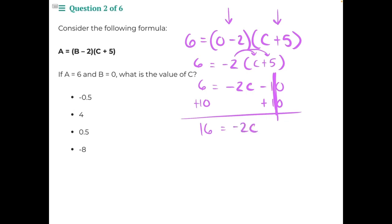Negative 2 is being multiplied to C, so the opposite operation here is division. Divide both sides by negative 2. These will cancel each other out, leaving us with 16 divided by negative 2, negative 8 equals C. So our answer is negative 8.